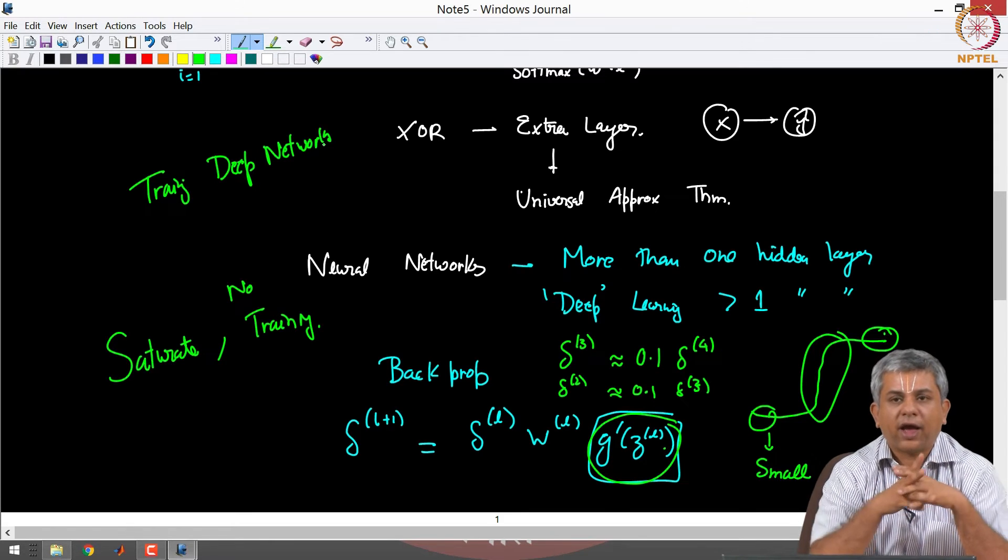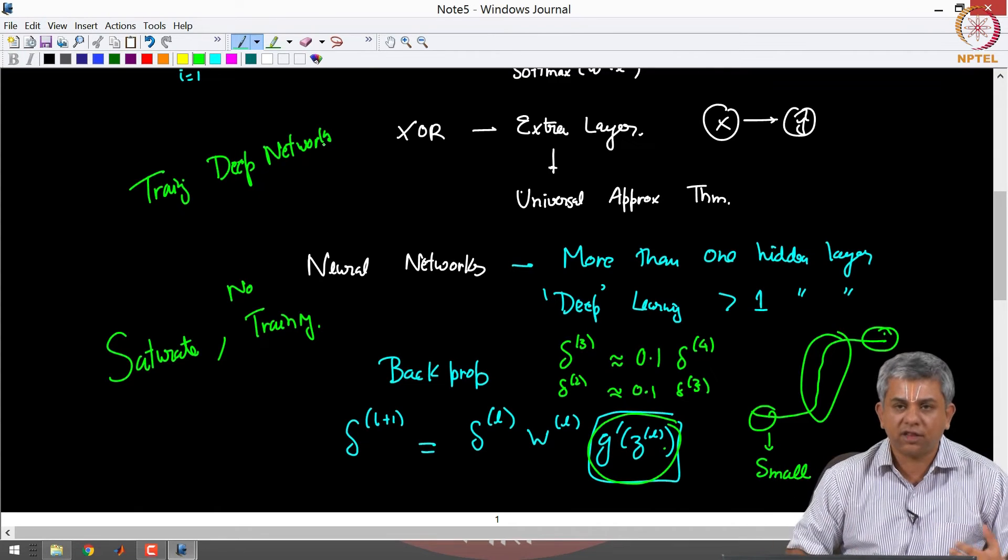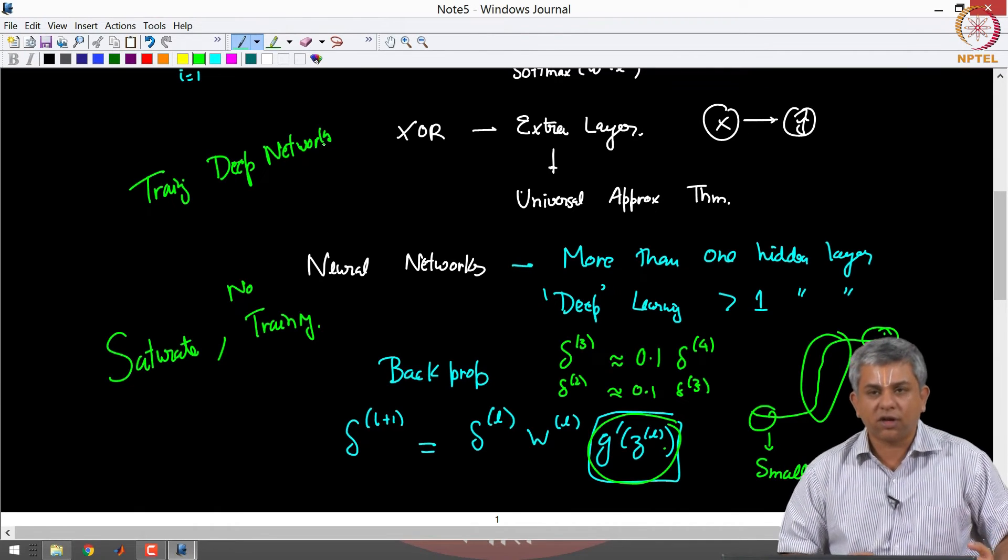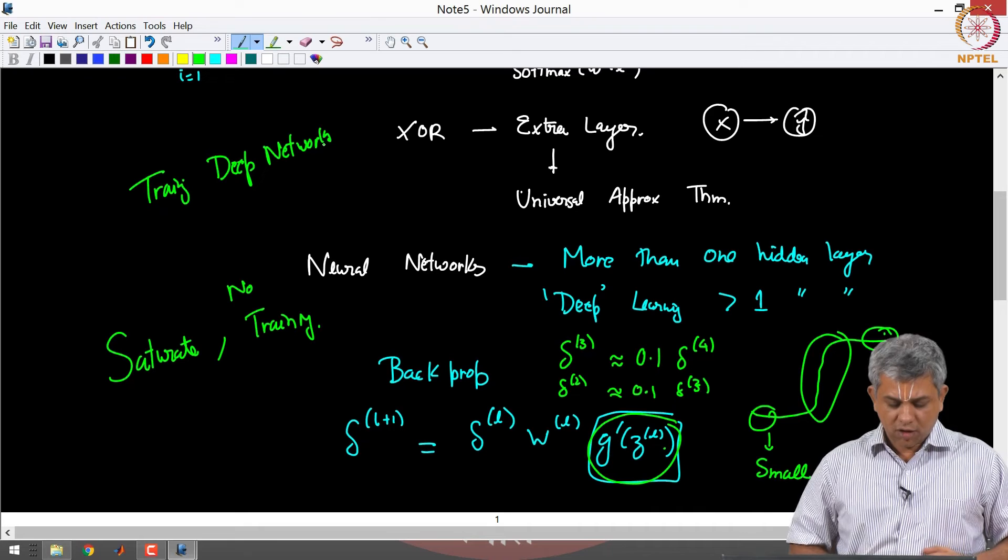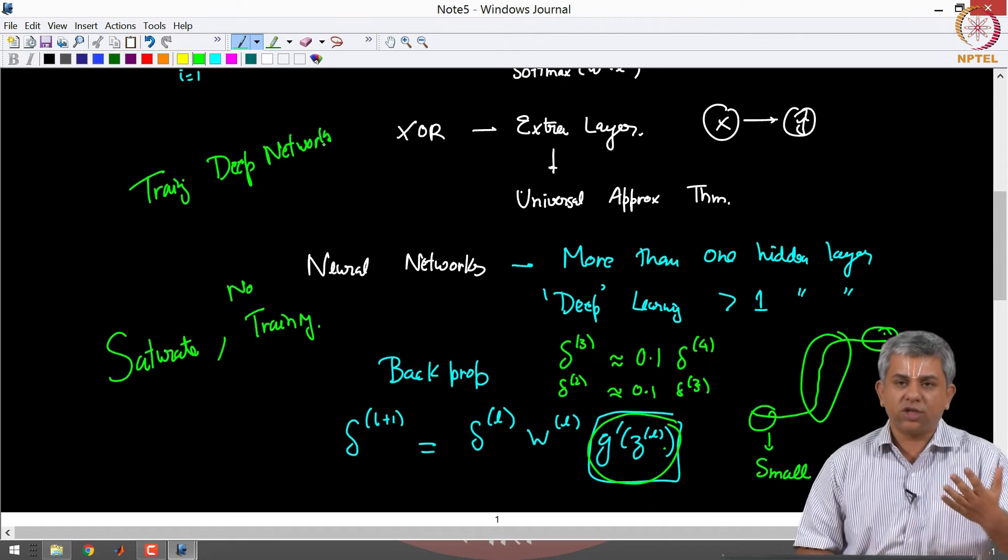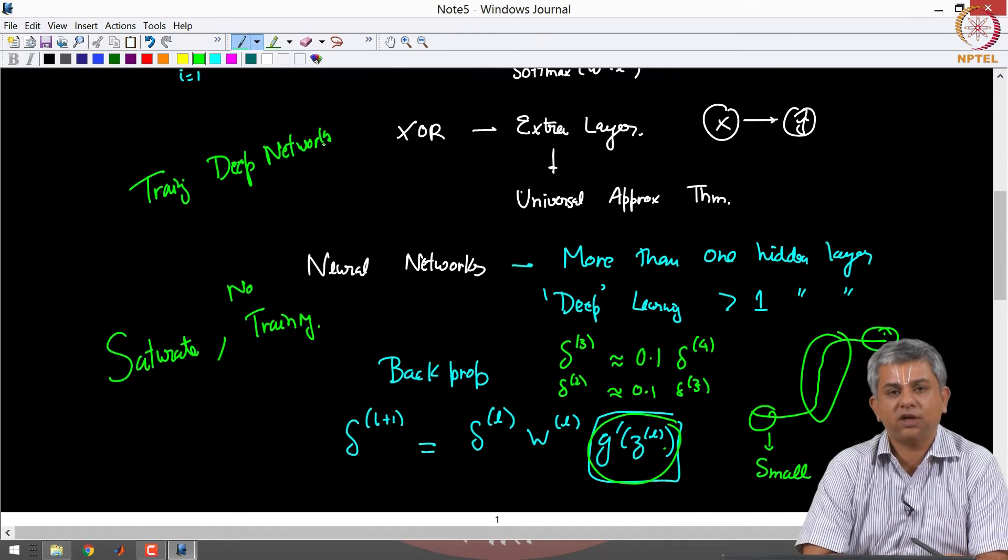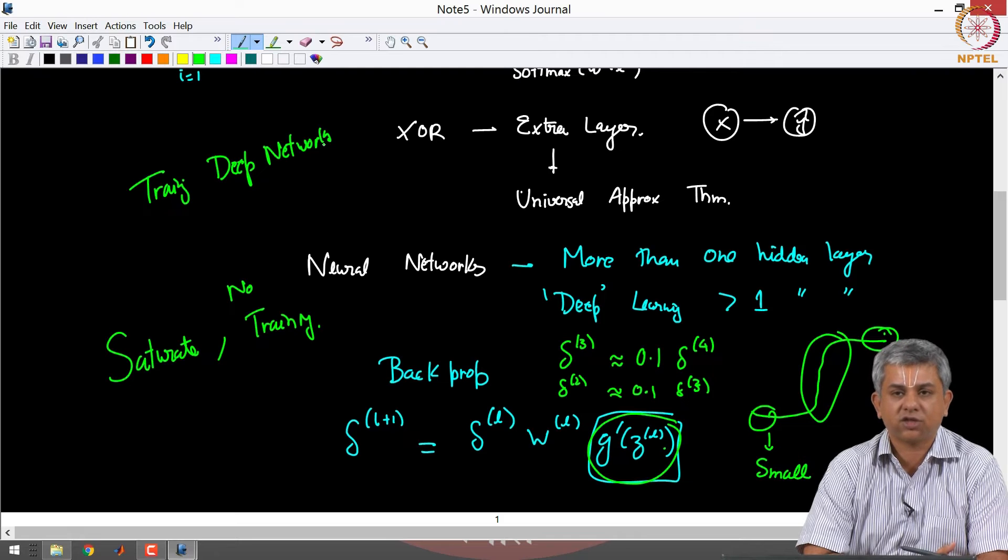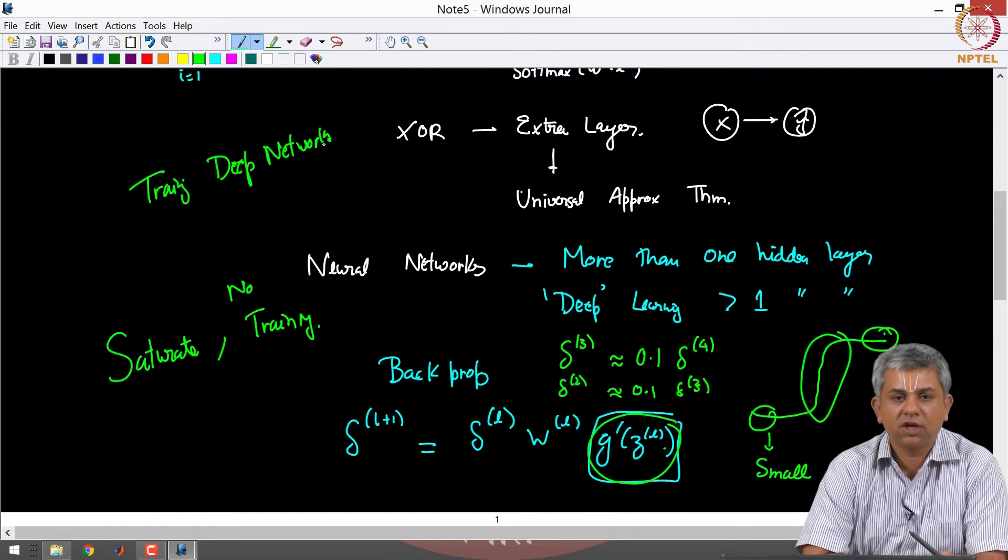Or you could have something which you think should train but it does not train, and this is where a lot of neural network research stagnated. So there are tricks in order to do this and Dr. Ganapathy will discuss several tricks for this in the context of convolutional neural networks next week.